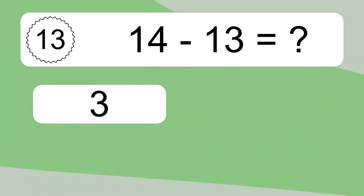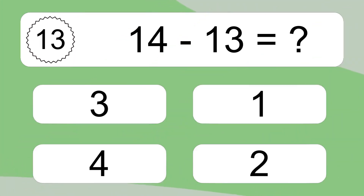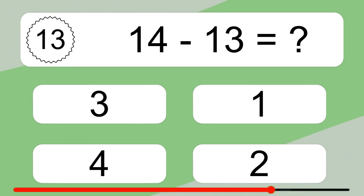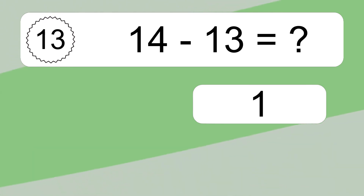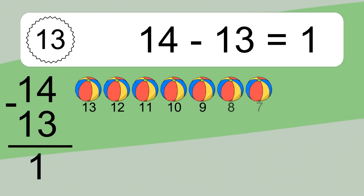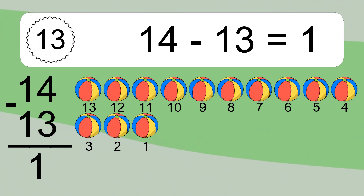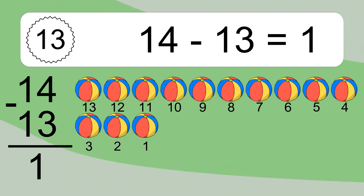14 minus 13 equals what? 14 minus 13 equals 1. Let's count it: 13, 12, 11, 10, 9, 8, 7, 6, 5, 4, 3, 2, 1.